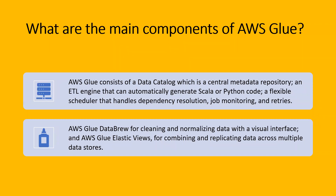What are the main components of AWS Glue? AWS Glue consists of: the Data Catalog, which is the central metadata repository; an ETL engine that can automatically generate Scala or Python code, though we can also write our own code; a flexible scheduler that handles dependency resolution, job monitoring and retries; and AWS Glue DataBrew for cleaning and normalizing data with a visual interface for data analysts and data scientists.